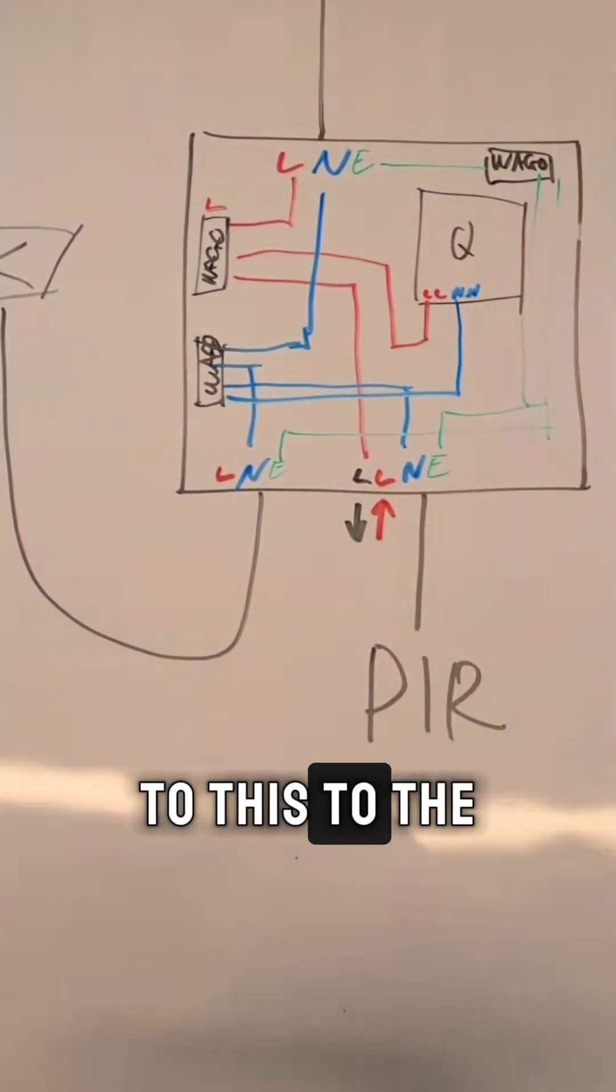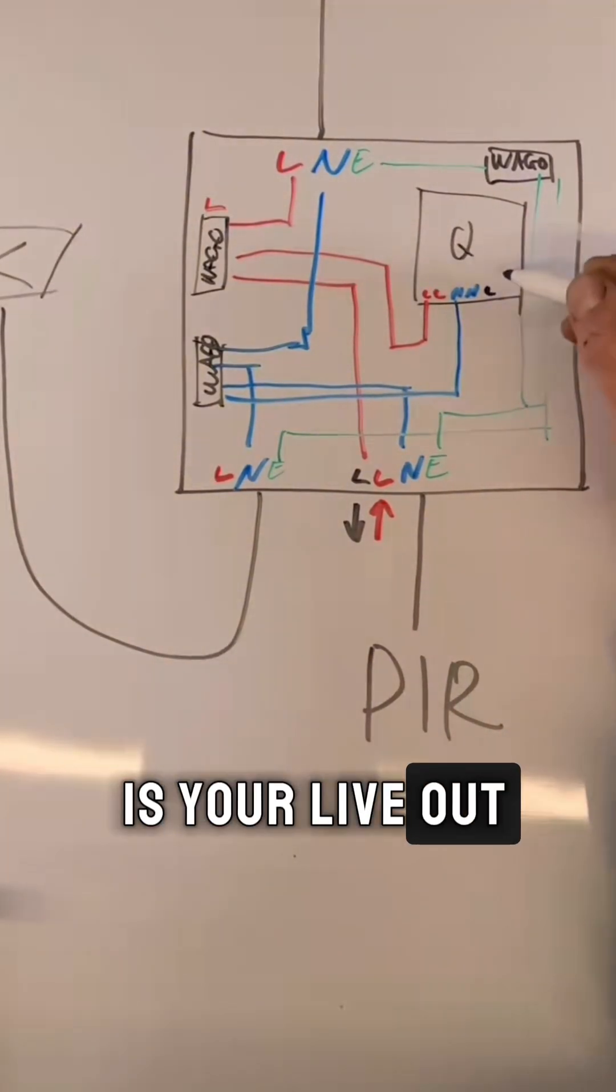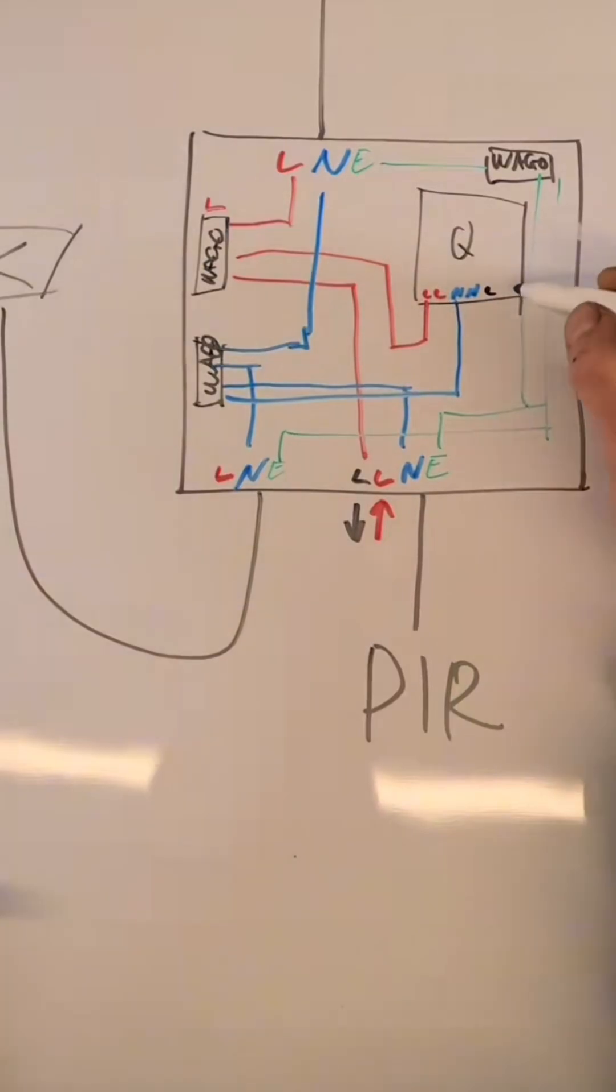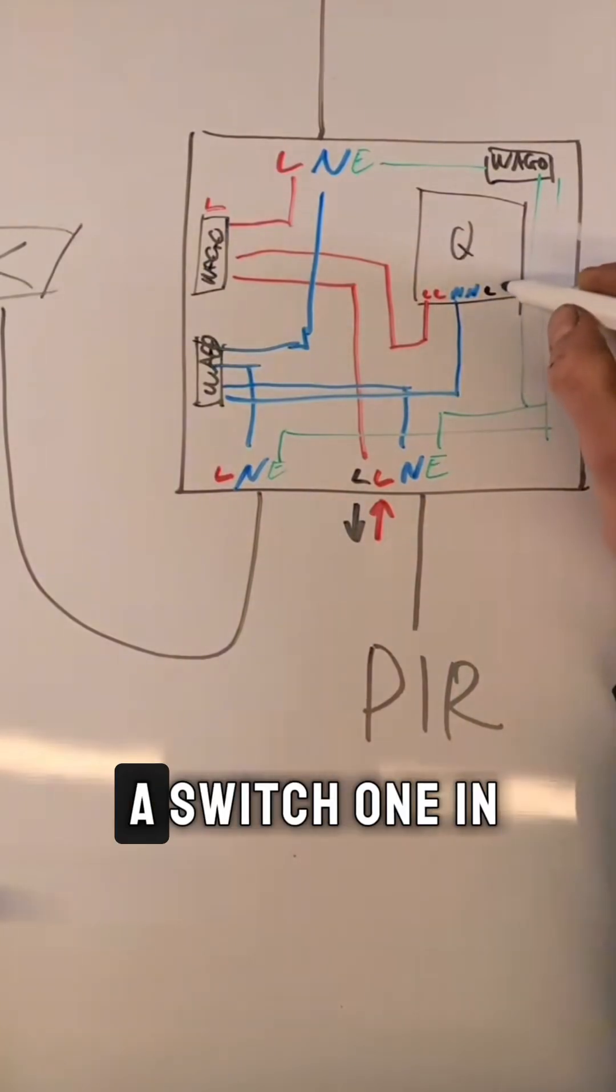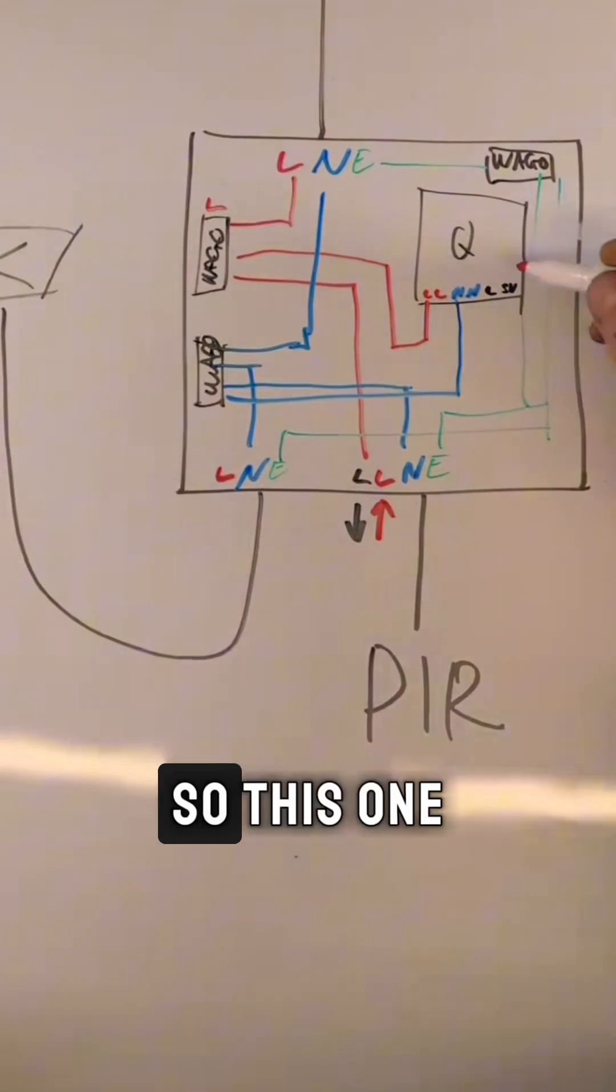And then we also had a neutral to the Wi-Fi receiver. Then in here, that is your live out, and then there is a switch one in there as well, but we didn't use that.